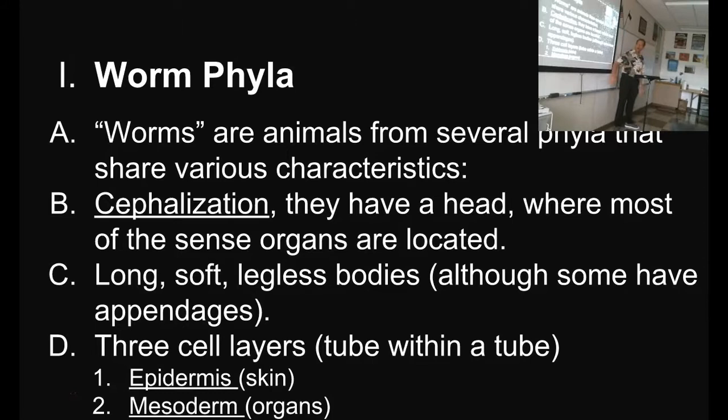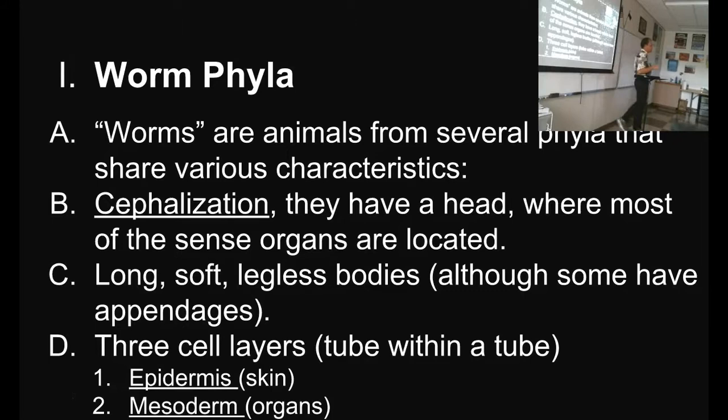We use the same terms for you — epidermis is your skin. Mesoderm is a layer of tissue in the embryo that you will encounter again when we talk about more complicated animals. And endoderm — we use that same word again. So these three cell layers are with us for the rest of the animal groups. The worms are the simplest creatures to demonstrate the three layers of tissue, but you will see them as we move forward.